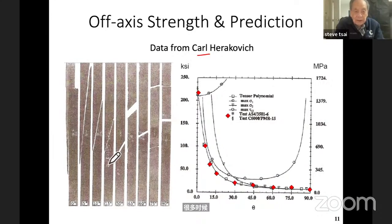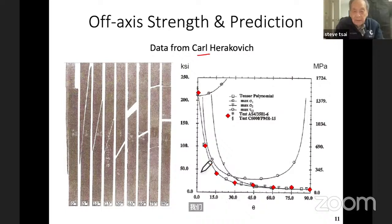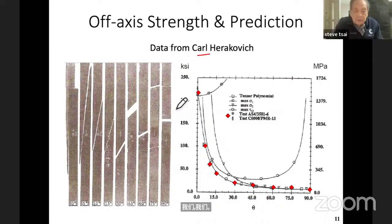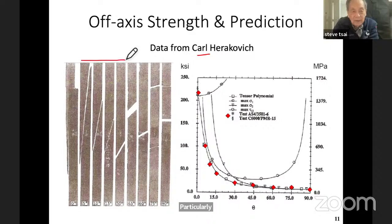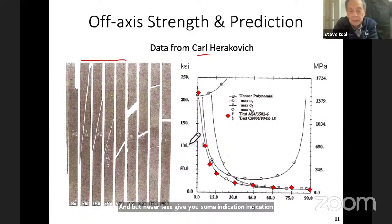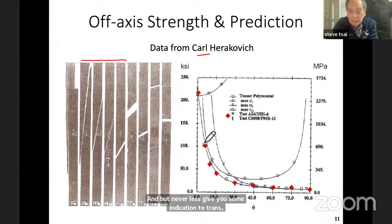This is also data by Professor Horowitz using the off-axis test — coupons at various angles from 0 to 90 — and you can see the theory compared with the data points. These tests are very difficult to do because with off-axis tests you have shear coupling coefficients, particularly at shallow angles between 0 and 45. They are extremely difficult to do, but nevertheless give some indication of the trends as compared with the theory.